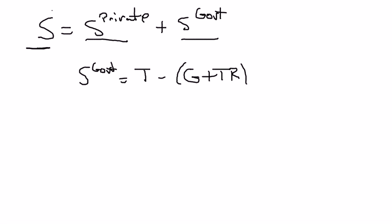I'm going to talk about things from the perspective of an increase in government spending, and the clearest case will be something if we just talk about, say, the government spends more because there's a war. So there's an increase in the amount of military expenditures. Let's call it a permanent increase in government spending. Everything that follows, you would get very similar results if you talked about a permanent increase in transfer payments — Social Security, Medicare, Medicaid, unemployment benefits, those types of things.